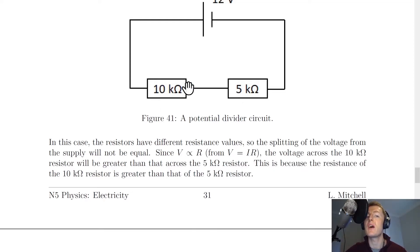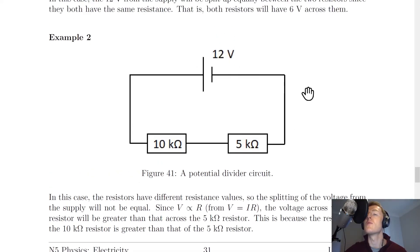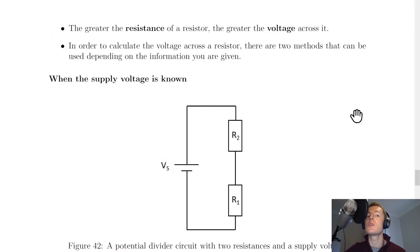Because this resistance value is bigger, it will take a greater share of the voltage. This is because the resistance of the 10 kilo ohm resistor is greater than that of the 5 kilo ohm resistor. And in actual fact, because this one is double the resistance, this will actually take double the voltage. So this would in fact be 8 volts across this, and this would be 4 volts across this one, to add up to the 12 volts that we have from the supply. So we can conclude that the greater the resistance of a resistor, the greater the voltage across it.